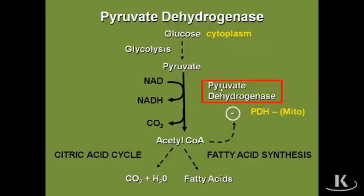PDH takes the high energy electrons from the 3-carbons of pyruvate and puts them onto NAD to form NADH as one of the products. The fate of that NADH, because this is in the mitochondria, is to go into the electron transport chain, generating 3 ATPs in the pathway called oxidative phosphorylation. So 3 ATPs come from this mitochondrial-generated NADH.